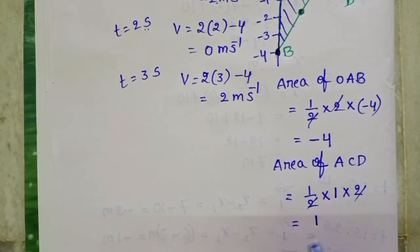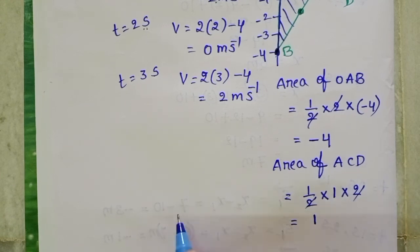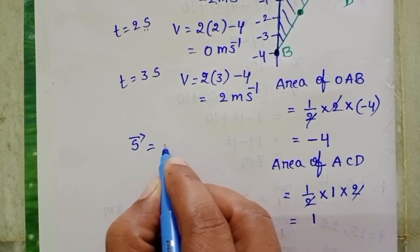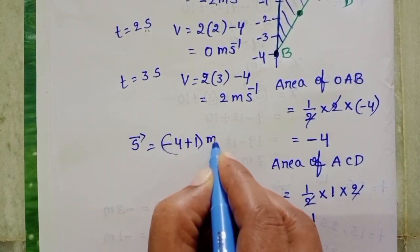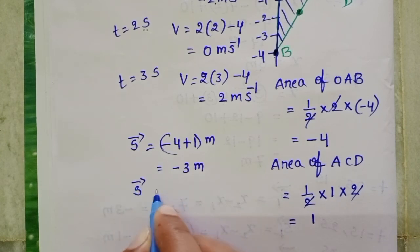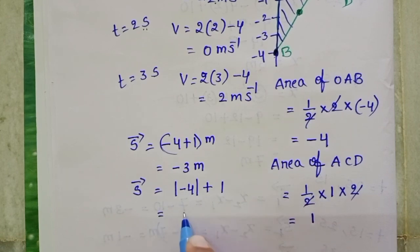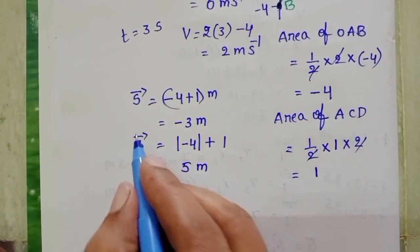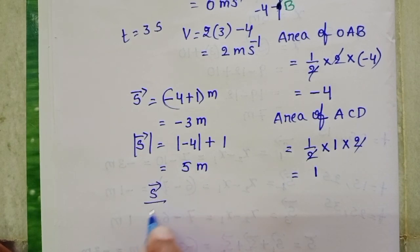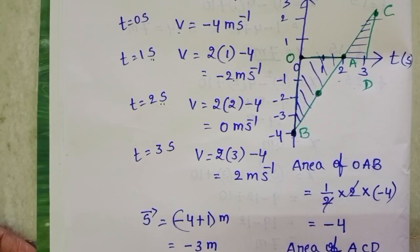Taking directions into account gives displacement = minus 4 plus 1 = minus 3 meters. Taking magnitudes gives distance = |minus 4| + |1| = 5 meters. The ratio of displacement to distance is minus 3 by 5. Students, follow either one of the methods.